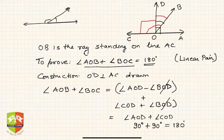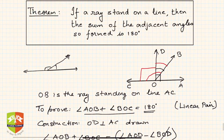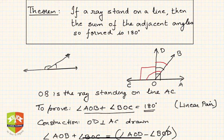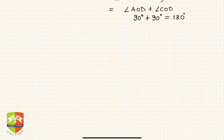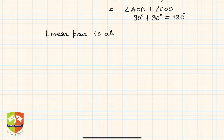Hence we proved that if a ray stands on a line, then the sum of the adjacent angles so formed is 180 degrees. We will be using this theorem a lot. Hence we say a linear pair is always supplementary.